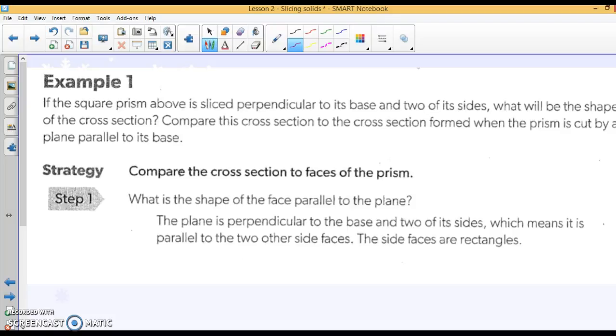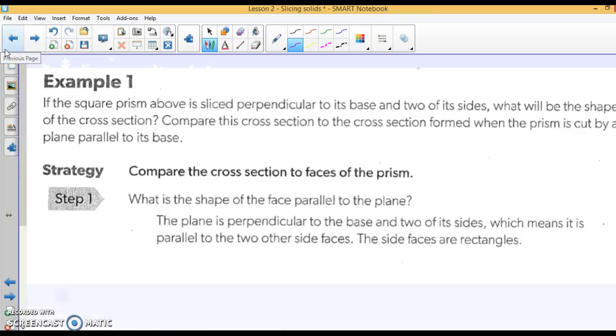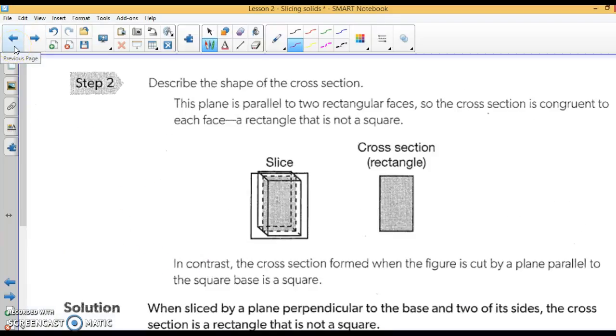Example one: If the square prism above is sliced perpendicular to its base and to its side, what will the shape of its cross-section be? So I'm going to attempt to draw this. That means we'd be slicing it right down through here, because here's its two bases. And if I sliced it, it would go along like this. What would the shape be? It would be a rectangle. There it is, right there.